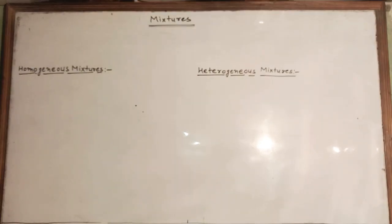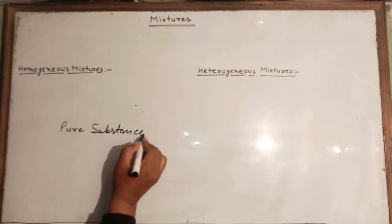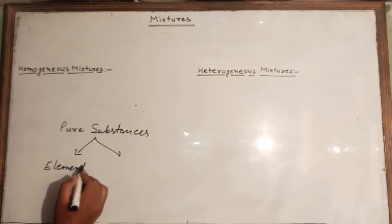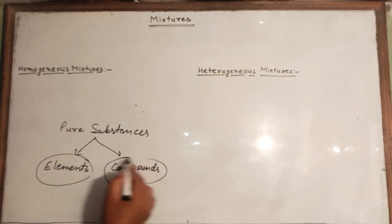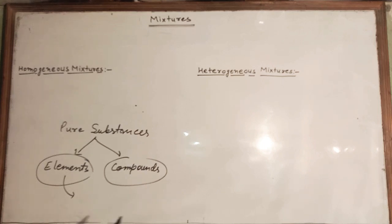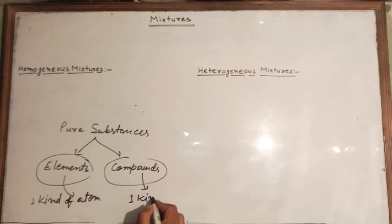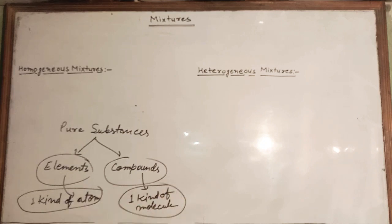Hello students, in this video we are going to learn about mixtures. In the previous video we learned about pure substances, which were divided into two categories: elements and compounds. Elements are substances made up of only one kind of atom, whereas in the case of compounds, there is only one kind of molecule.